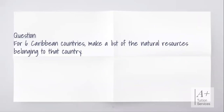For six Caribbean countries, make a list of the natural resources belonging to each country. For example, Trinidad and Tobago has oil and gas, Jamaica has bauxite, Guyana has bauxite. Take six countries and list their natural resources. Throughout this video, pause and make your notes, as these are clear and concise notes you can use to study from and apply to your school exams and general exams.